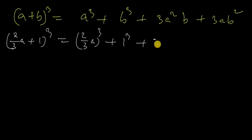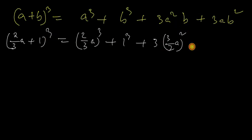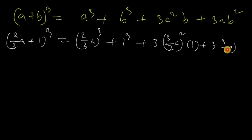We have plus 3 A squared, where A is 2/3 A whole square, times 1. Plus 3 A times 2/3 A into B squared, where B squared means 1 squared. Simplifying all terms.